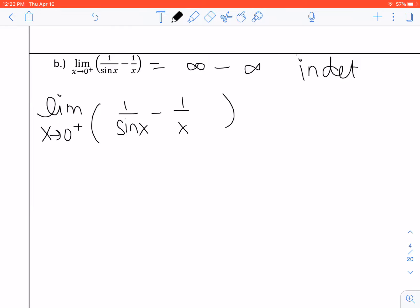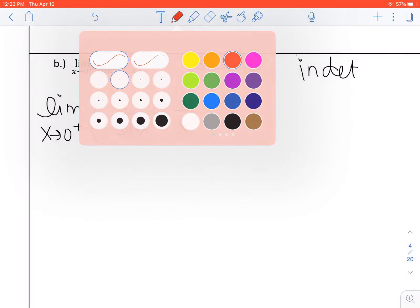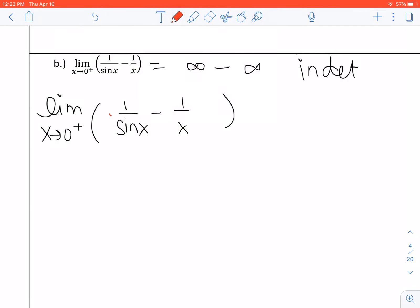So in order to do that, you need to make sure that they have a common denominator. So I'm going to multiply the first one by X over X and the second one by sine X over sine X. And when I do that, this is going to become the limit as X approaches 0 on the right, and we are going to have X times 1, which is X, minus 1 times sine X, which is sine X, over X sine X.